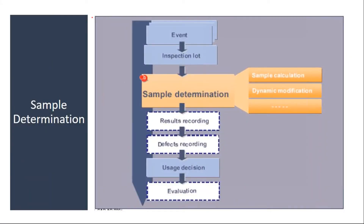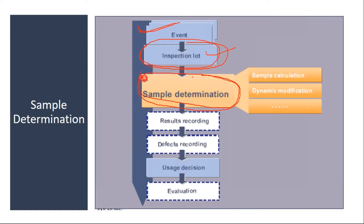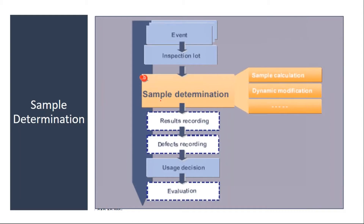The sample determination happens based on certain events — like when you receive material from a supplier, or when you produce a product and do the goods receipt. If you have all the settings in place, the system will generate an inspection lot. Once the inspection lot is generated, the next step is sample determination. For example, if you received 100 liters, how much sample you need to take from that 100 liters for quality inspection is determined by sample determination. In the quality inspection flow, after lot creation, the next step is sample determination — that is the sample size calculation, sample quantity calculation.